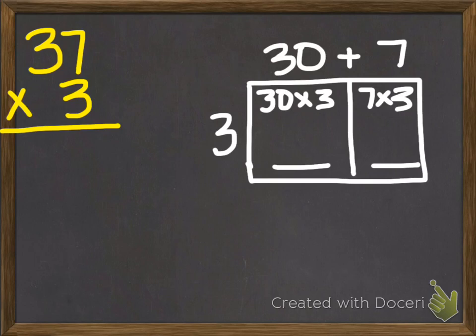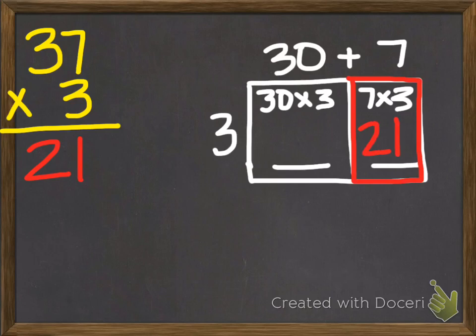The first step in the expanded algorithm is to look at the ones here. Here, it's asking us to multiply 7 times 3. So 7 times 3 is 21. You can see that over here on the area model. 7 times 3 is 21.